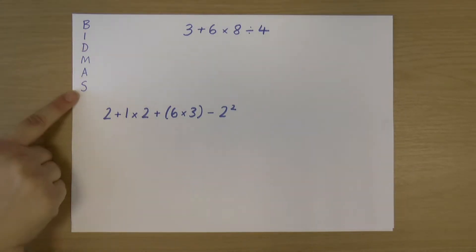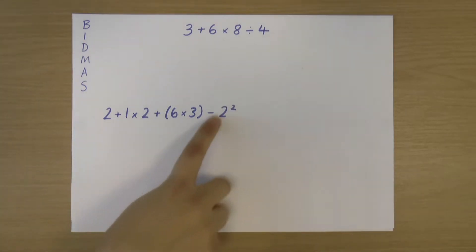It's actually an acronym for brackets, indices—so indices are these powers here. You can see an example here. We've got 2 to the power of 2, or 2 squared. That's an index. Those are our indices.